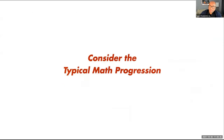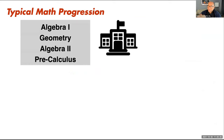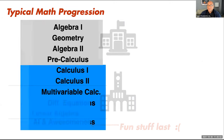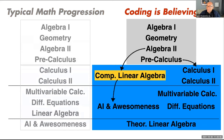If we consider the typical math progression — algebra one, geometry, algebra two, then the calculus track, and maybe at the end linear algebra — that puts the fun stuff last, which defeats a lot of students and has big effects on diversity. Instead, with a coding-as-believing approach, we take linear algebra and break it up, providing a good first-year introductory experience using computational linear algebra, with theoretical linear algebra further back. Students get earlier access to AI, and we can make it more accessible. This is how we can alleviate pain points in our current curriculum.